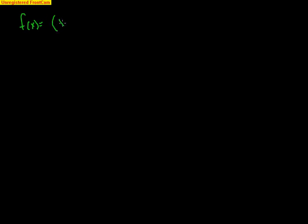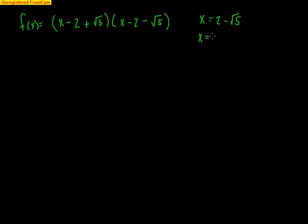Let's look at one that has some square roots in it. Let's say a factored form looks like this: x minus (2 plus radical 5), and the other factor is x minus (2 minus radical 5). The zeros would be 2 minus radical 5 and 2 plus radical 5. If I set each factor equal to zero, I add the 2 over and adjust the radical to get those zeros back. Let's multiply these together to see how this really works — basically working backwards to prove these are zeros and factors.